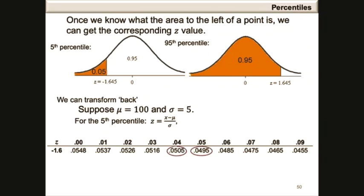In the table, our value of 0.05 lies between 0.0495 and 0.0505. To read off a more precise z-value, we need to find which of these two values is closest to 0.05. The difference between 0.0505 and 0.05 is 0.005, and similarly the difference between 0.05 and 0.0495 is 0.005 as well.